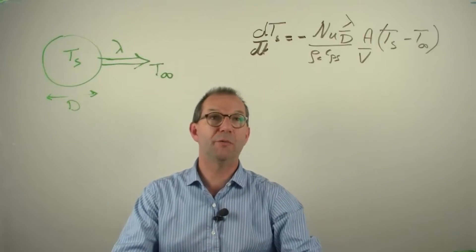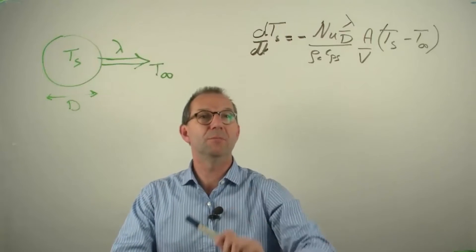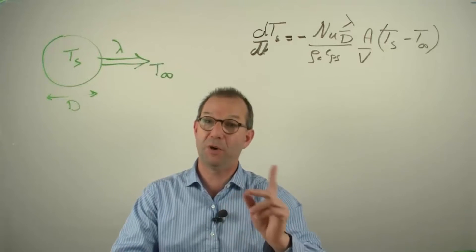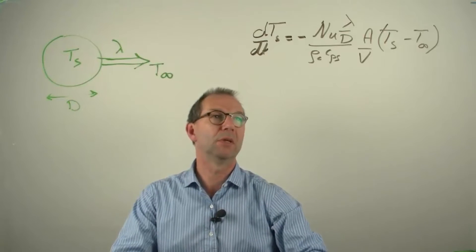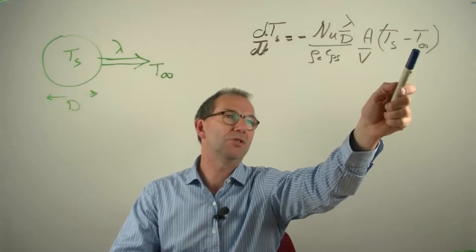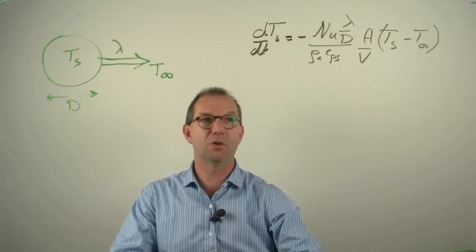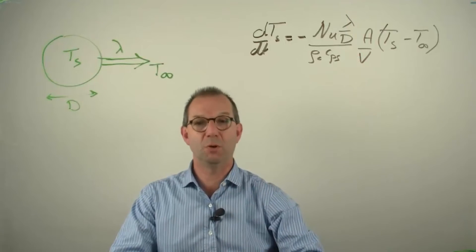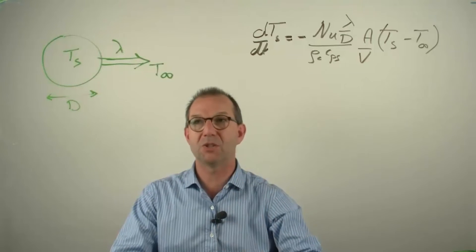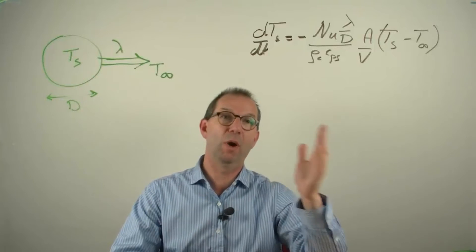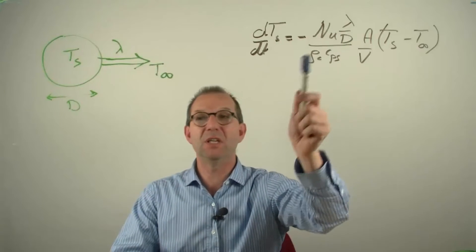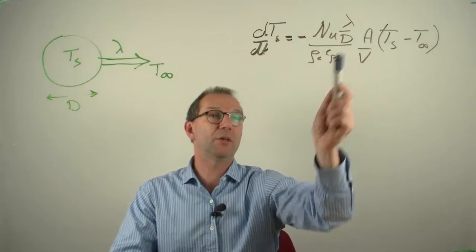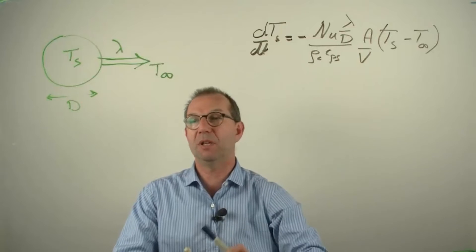How do you solve such an equation? Let's first look at what are the variables. T, the sphere, is obviously our unknown that we would like to have as a function of time. T infinity, far away, is a given constant. Nusselt is a given constant, 2 in the case because we were dealing only with conduction away from a sphere. D is a constant, the diameter of the sphere is not changing during cool down. A and V are also constant and rho, Cp are by and large constant.